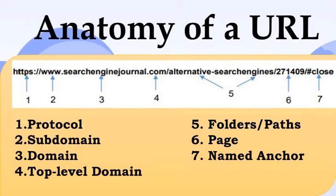A URL is one type of Uniform Resource Identifier, or URI. It is a generic term for all types of names and addresses that refer to objects on the World Wide Web. Knowing the URL endings will give you clues about who is sponsoring the website and help you evaluate the sources. The first part of a URL is the protocol, which declares how your web browser should communicate with a web server when sending or fetching a web page or document. The most common protocol is HTTP, which stands for Hypertext Transfer Protocol.